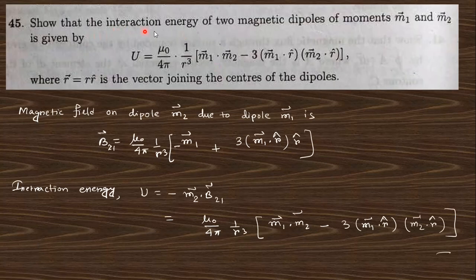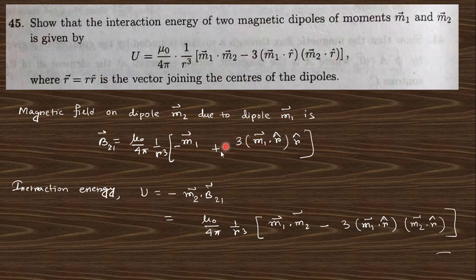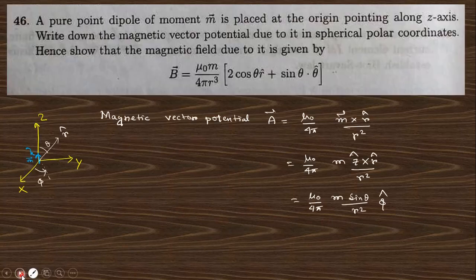Question 45: Show that the interaction energy of two magnetic dipoles m₁ and m₂ is given by a specific expression. The magnetic field at dipole m₂ due to m₁ is written using a formula similar to the electrostatic case — just as in electrostatics with 1/(4πε₀) and electric dipole p, the interaction energy is m₂·B₂₁. Substituting this value gives the final answer, analogous to the electrostatic interaction energy.